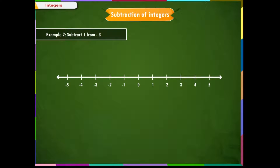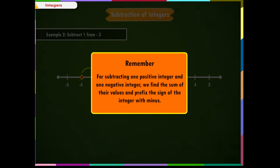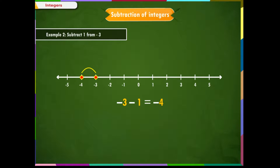Example 2: Subtract 1 from minus 3. Write the problem as minus 3 minus 1. Using a number line, mark the first integer, minus 3. Since we are subtracting a positive integer, that is 1, as per our rule, we start from minus 3 and move one step towards left. We reach at minus 4. Therefore, minus 3 minus 1 is equal to minus 4. For subtracting one positive and one negative integer, we find the sum of their values and prefix the minus sign.